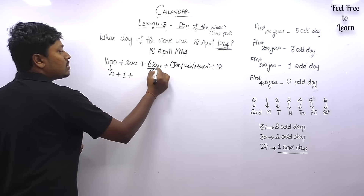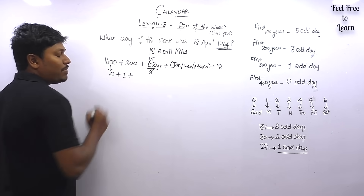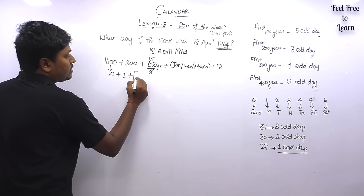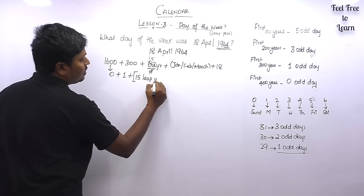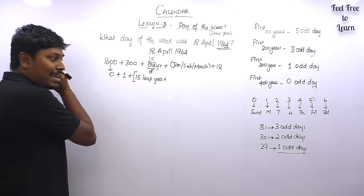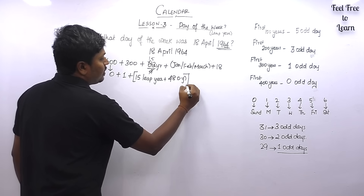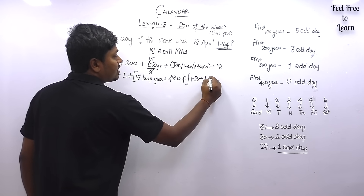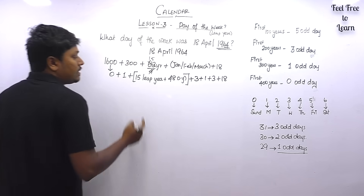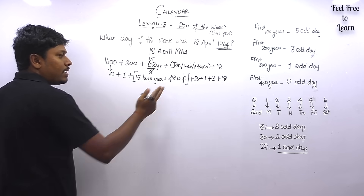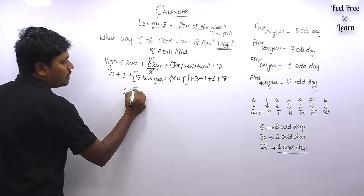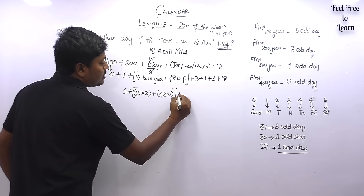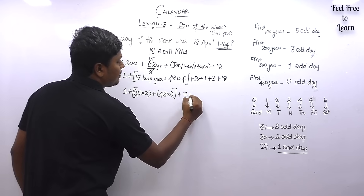Dividing 63 by 4 gives 15 leap years and 48 ordinary years. January has 31 days giving 3 odd days. February in a leap year gives 1 odd day. March again has 31 days giving 3 odd days, plus 18 days for the target date. Every leap year gives 2 odd days: 15 × 2 = 30. Every ordinary year gives 1 odd day: 48 × 1 = 48. Adding: 1 + 30 + 48 + 3 + 1 + 3 + 18 = 104.